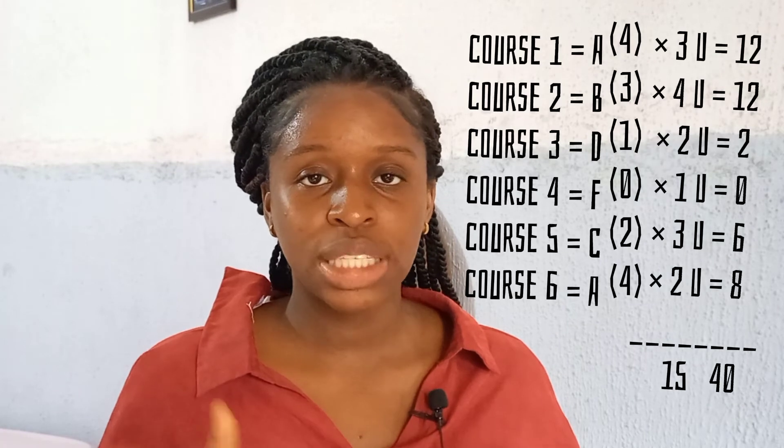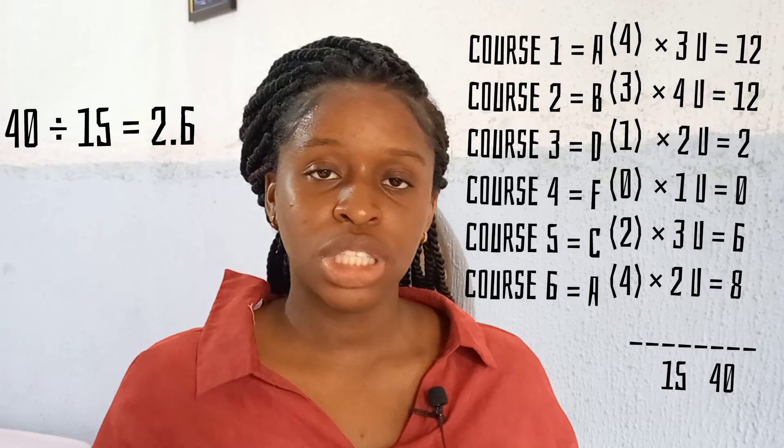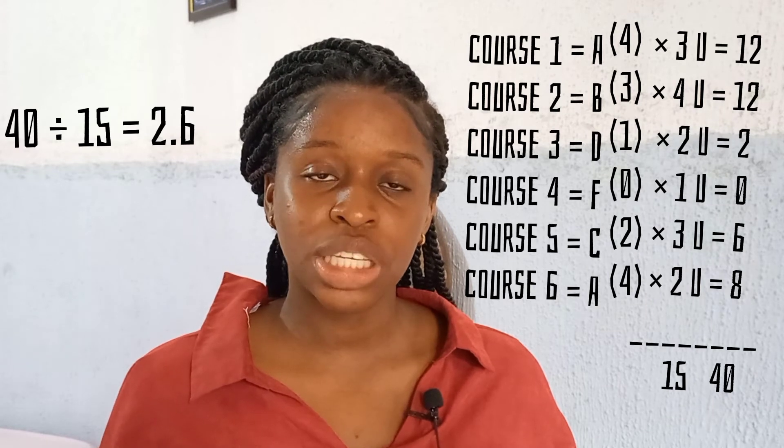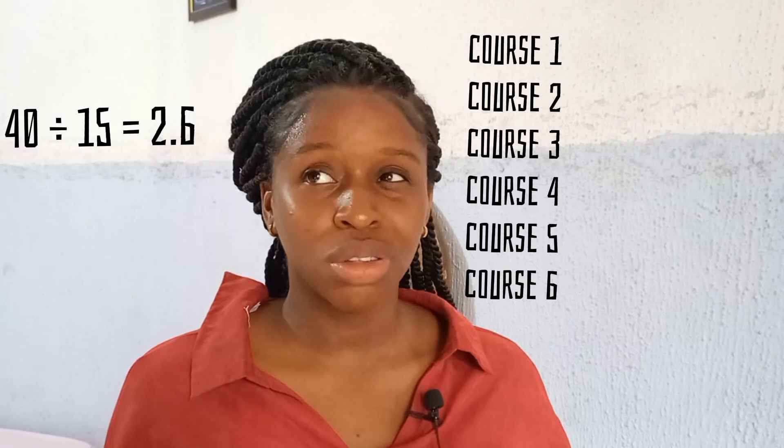That 40 is our Total Quality Points and 15 is our Total Cumulative Unit. So 40 divided by 15 gives us 2.6. On a 5.0 GPA system, 2.6 is not the best, but on a 4.0 GPA system, 2.6 is a slightly B grade, which is actually good. I hope I've explained how to calculate the 4.0 GPA system clearly.